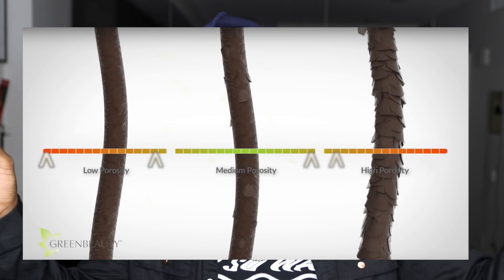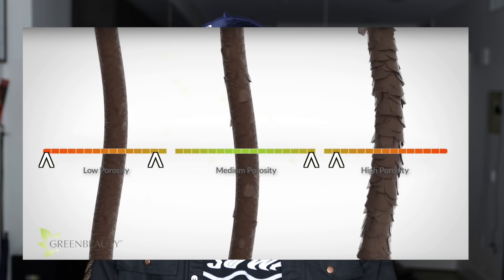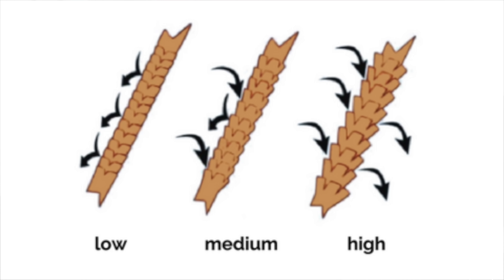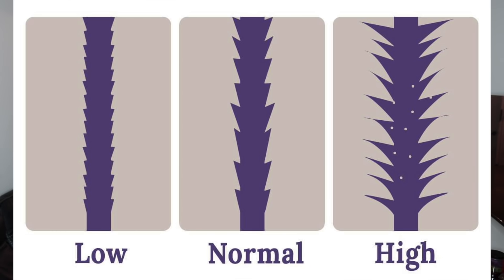Some of you might fall on the edge, some of you might be in the middle. Medium porosity is when the cuticles on your hair are not as tightly bound — it's basically a sweet spot because the cuticles are open just enough to let moisture in without letting too much moisture out. If you have medium hair porosity you're going to find that your hair is very easy to manage.